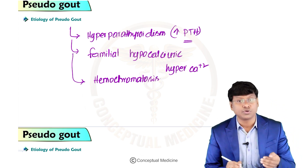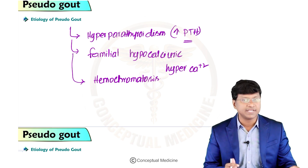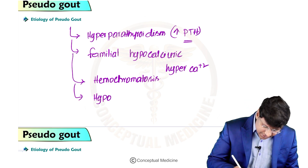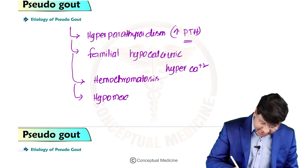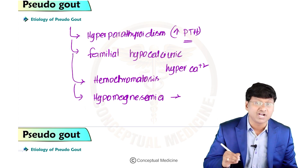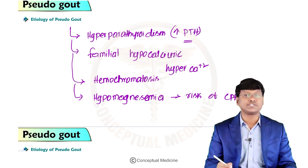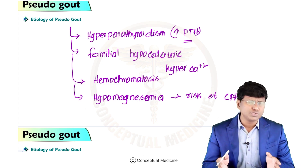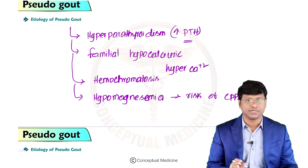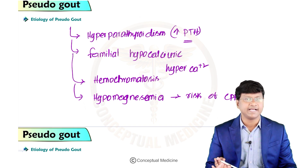The third etiology is hemochromatosis, which is a disorder characterized by excessive accumulation of iron in the body. Another important electrolyte abnormality contributing to CPPD deposition is hypomagnesemia. Most cases may have no association at all, but the underlying etiologies include hyperparathyroidism, familial hypocalciuric hypercalcemia, hemochromatosis, and hypomagnesemia.